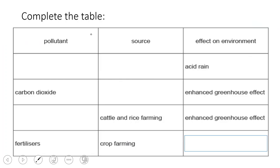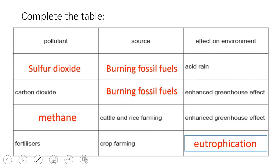After covering all aspects and types of pollution, complete this table: the pollutant, its source, and its effect on the environment. For acid rain — what is its source? For carbon dioxide — it enhances the greenhouse effect. Methane from cattle and rice farming also enhances the greenhouse effect. Excess fertilizers lead to eutrophication. That's pollution for IGCSE — thank you for watching, and don't forget to subscribe to the channel for more videos.